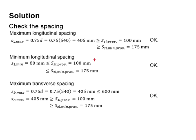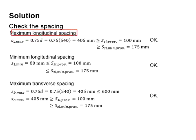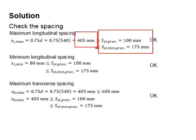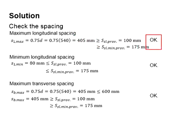Next, you check for the spacing of the shear link. The longitudinal maximum spacing is limited to 0.75d. From the calculations, this equals 405 mm. The provided shear link spacing is less than the maximum spacing, therefore it is considered acceptable.